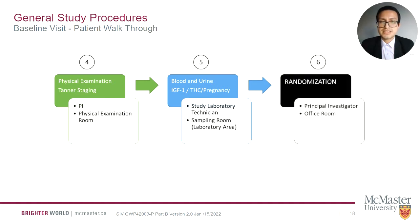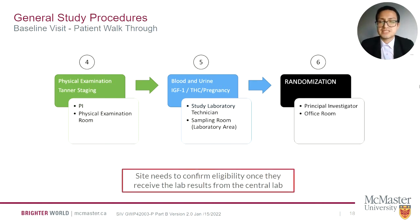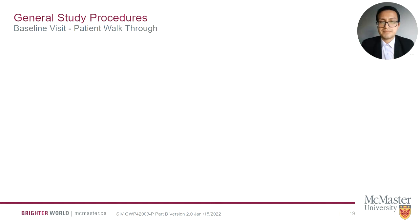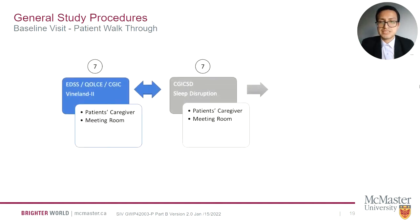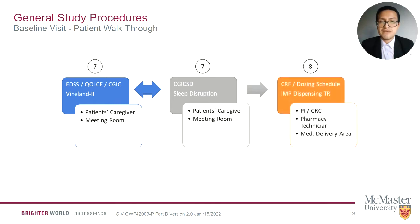If the participant is eligible, the CRC will randomize them in the IVRS in the office room. Sites need to confirm eligibility once they receive the lab results from the central lab. The CRC will ask only eligible participants to go to the meeting room for the next step. The following questionnaires will be completed by the caregiver in the meeting room; the CRC will be present to answer any doubts. The CRC will complete the CRF within five days based on the source document, and the principal investigator will ensure that the CRF is correct and will sign it.